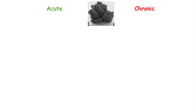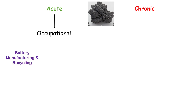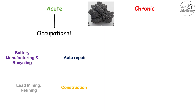Lead poisoning or lead toxicity can be broken down into acute and chronic forms. Acute lead poisoning is most commonly caused by occupational exposure, which is the reason why adult males are more likely to be affected than adult females. Occupations that increase the risk for exposure include battery manufacturing and recycling, lead mining and refining, auto repair, and certain types of construction, among others.